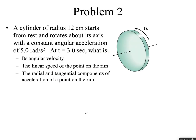Another problem: a cylinder of radius 12 centimeters starts from rest and rotates around its axis with constant angular acceleration of 5 rad/s². At t equals 3 seconds, find its angular speed. Using omega final equals omega initial plus alpha times t, starting from rest with alpha equals 5 and t equals 3, we get 15 radians per second. The linear speed is v equals omega times r, so 15 times 0.12 meters equals 1.8 meters per second.